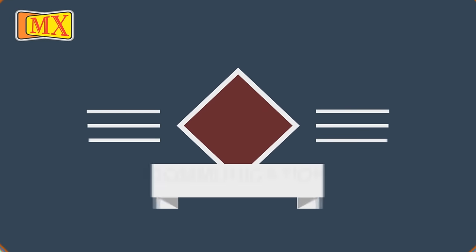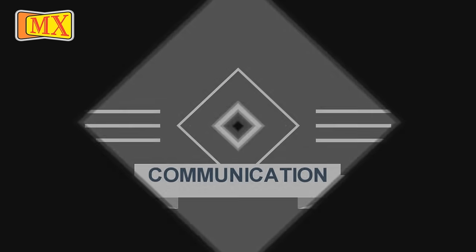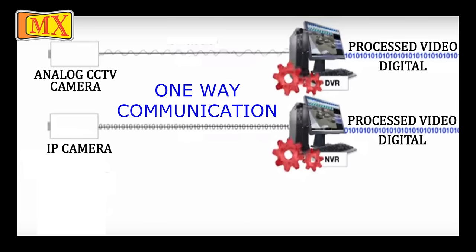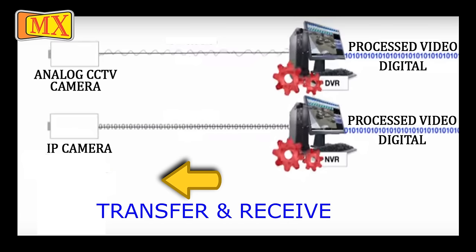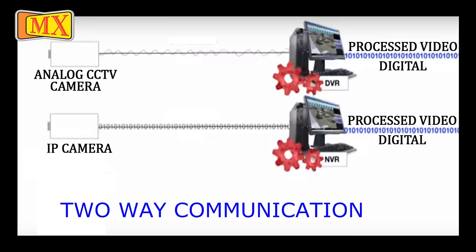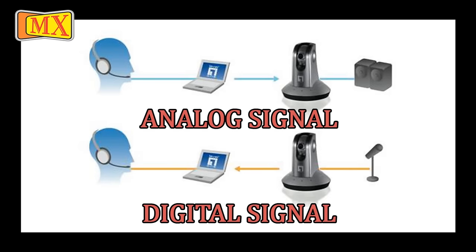The second difference is communication. Analog cameras can only transfer information to the DVR, and this is known as one-way communication. Whereas IP cameras can transfer and receive information from a remote computer over the internet — this is called two-way communication. This picture explains in the simplest form the meaning of one-way and two-way communication. Two-way communication simply means that users can interact with the video footage.